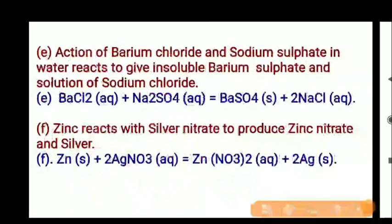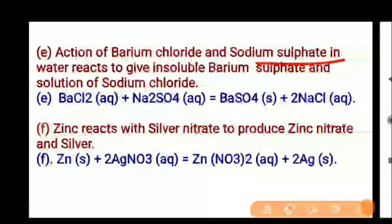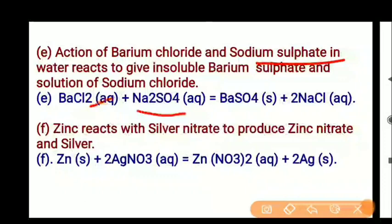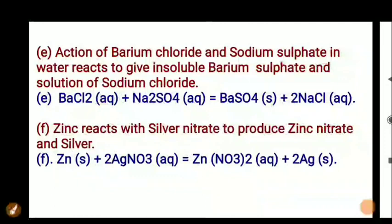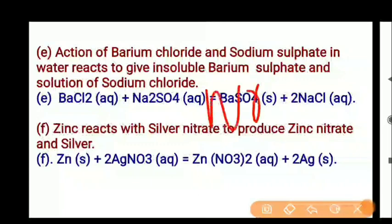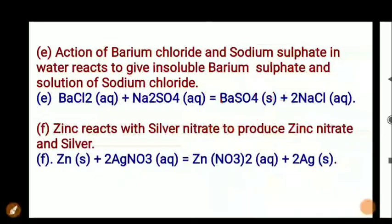Action of barium chloride and sodium sulfate: BaCl2 plus Na2SO4 gives barium sulfate plus 2NaCl. Insoluble barium sulfate and sodium chloride are formed. Next, zinc reacts with silver nitrate: Zn plus AgNO3 gives zinc nitrate Zn(NO3)2 plus silver solid Ag. These are equations E and F.